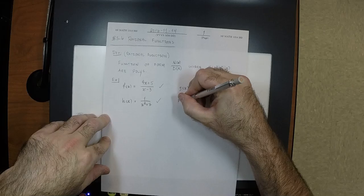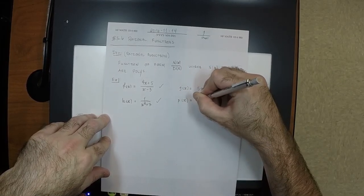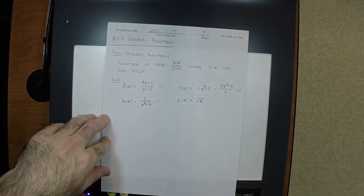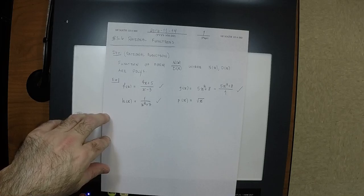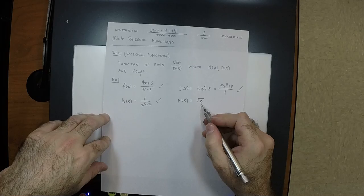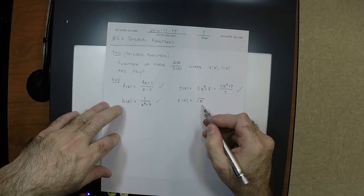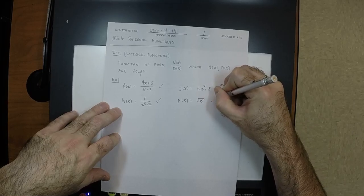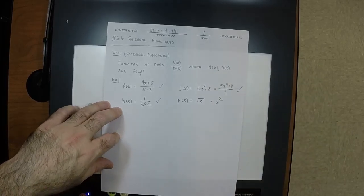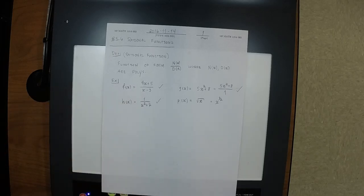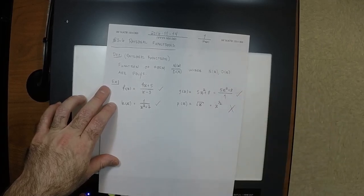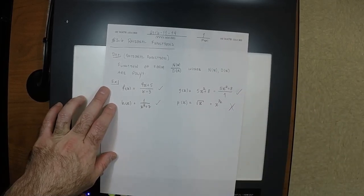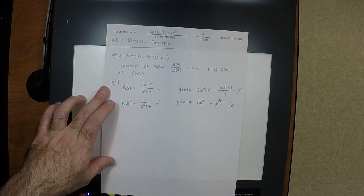How about p of x equals the square root of x — is this a rational function? It is not, because the square root of x can be written as x to the one-half power. To be a polynomial, the powers of x must be whole numbers, not one-half. So this is not a rational function. There are lots of functions that are not rational functions.